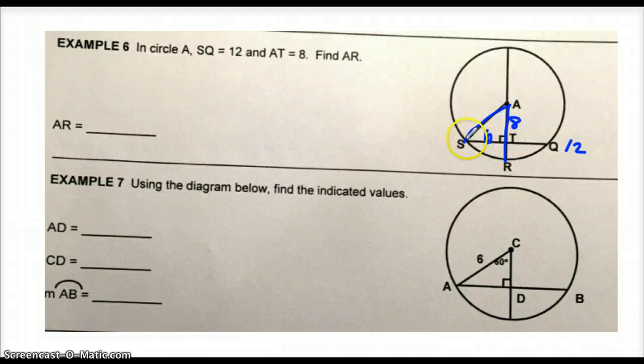Again, we have a right triangle. So we can use the Pythagorean theorem. And if you're familiar with your Pythagorean triples, you'll know that 6, 8, 10 is the lengths of a right triangle. And so we know the radius length is 10, which means that segment AR must also be 10.